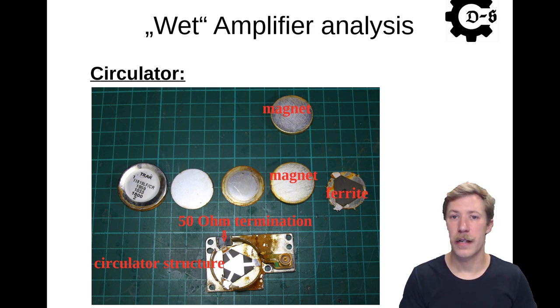Now the idea with a circulator is that the power can only rotate clockwise or counterclockwise one way around. So once you connect the input, that can only circulate to the output and the output can only circulate into the termination. And by that you have protected your amplifier from reflected energy from the antenna.